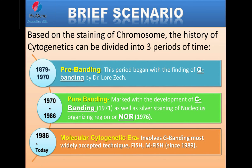A brief scenario of what has occurred in the field of cytogenetics: based on the staining of chromosomes, the history of cytogenetics can be divided into three periods. The first is the prebanding era, the second is the pure banding era, and the third is the molecular cytogenetic era. The prebanding era is marked by the finding of Q banding during 1879 to 1970. After the finding of Q banding, the pure banding era followed with the development of C banding and the silver staining technique of nucleolus organizing regions (NOR) in 1976. The molecular cytogenetic era, which continues today, involves G banding — the most widely accepted technique — as well as FISH, fluorescence in-situ hybridization.